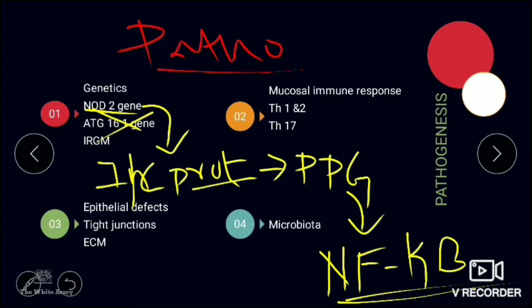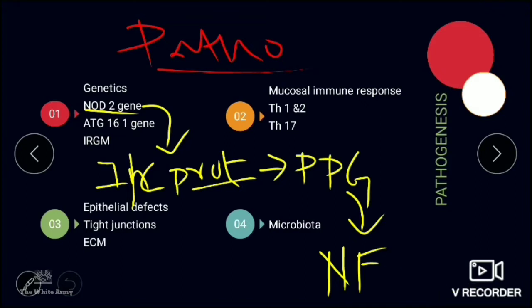There are also HLA studies — now referred to as MHC studies. Alterations in the HLA DRB1 allele, as well as HLA DR4 and DR7, have been shown to be present in patients with inflammatory bowel disease. The second factor is mucosal immune response.